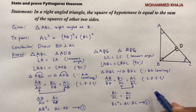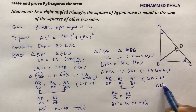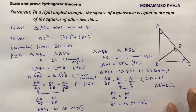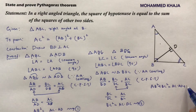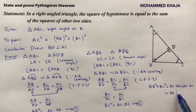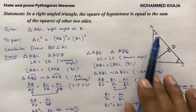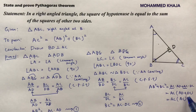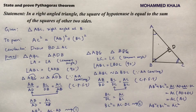Adding equation 1 and equation 2: AB² + BC² = AC × AD + AC × DC. Taking AC common: AB² + BC² = AC(AD + DC). From the diagram, AD + DC = AC. Therefore AB² + BC² = AC × AC = AC². Hence proved.